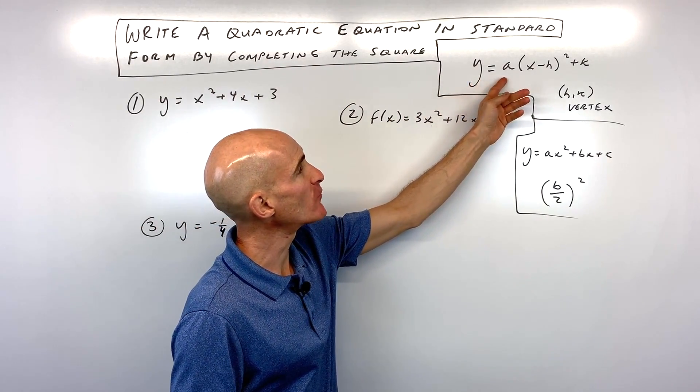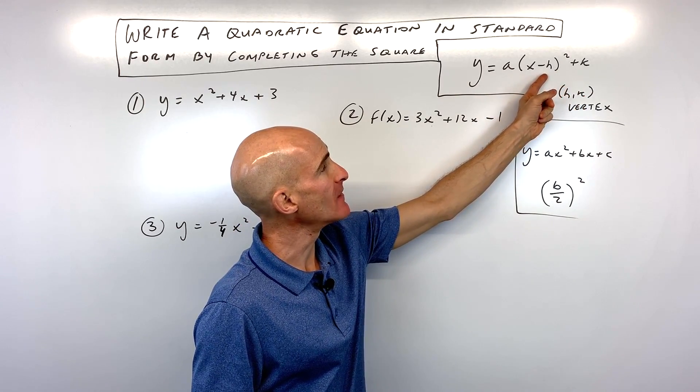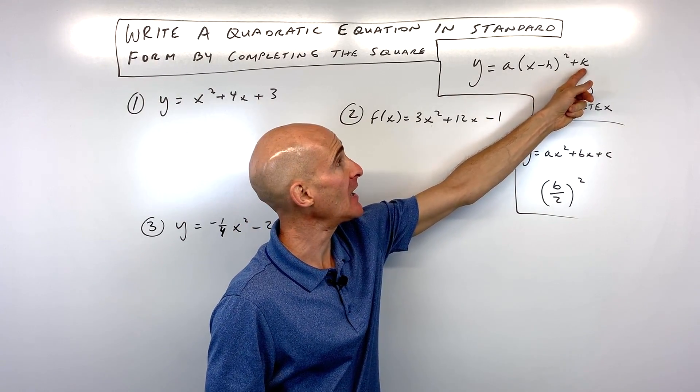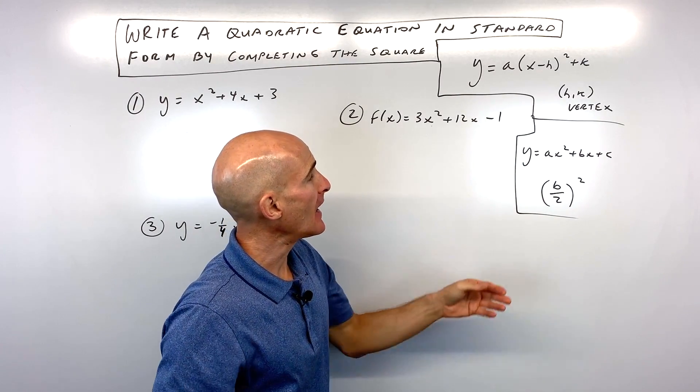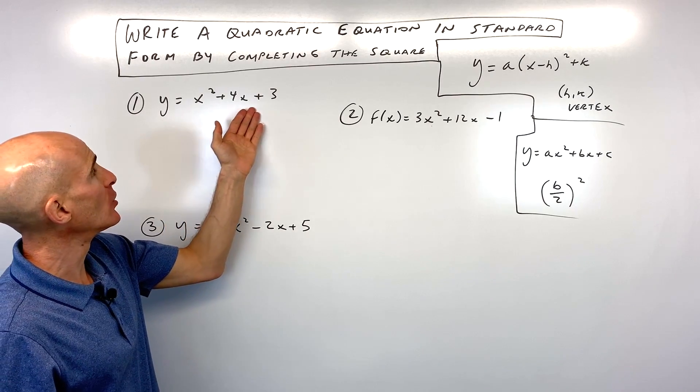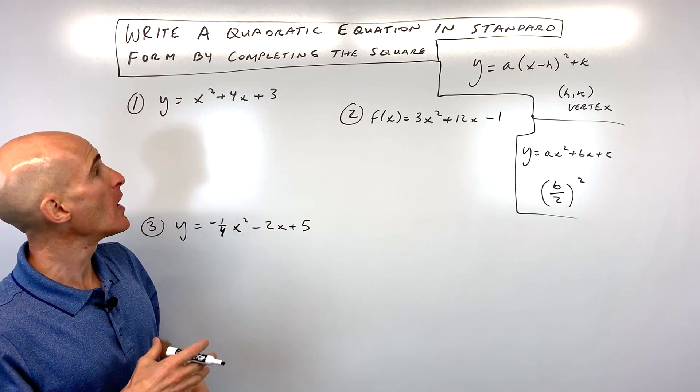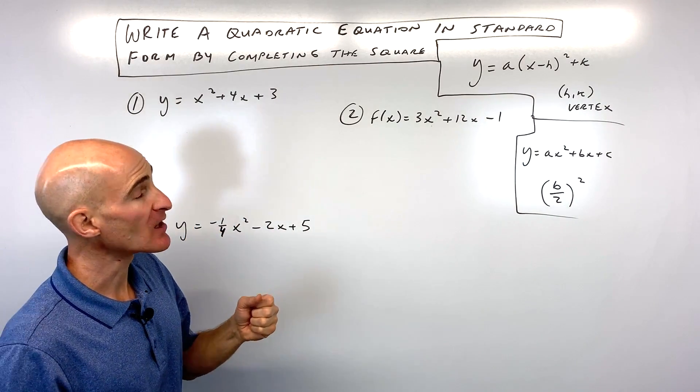The form that we're trying to get them into is this form right here. Notice the vertex H and K. The A involves a vertical stretch or vertical shrink. And the first thing we want to do here is we want to take a look at the quadratic and we want to rearrange it so that we can complete the square.